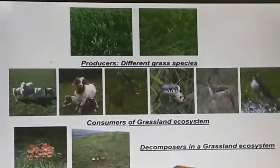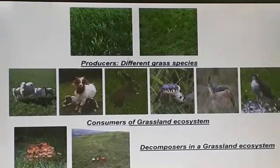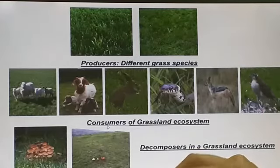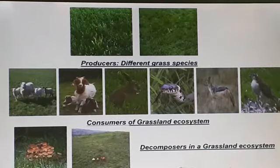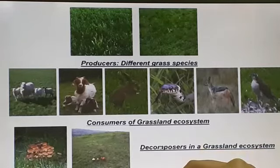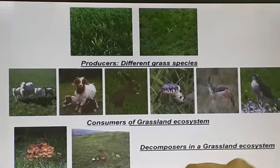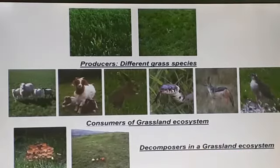This picture is an illustration of different types of producers, which are mainly grasses, and the consumers — herbivores, carnivores and birds — and two types of decomposers which are present in grassland ecosystems: fungi and bacteria.